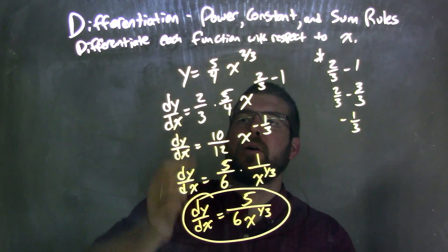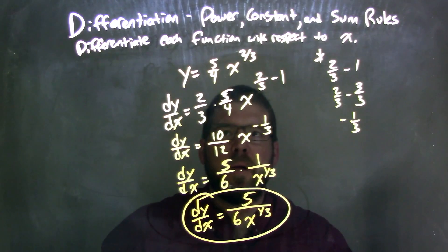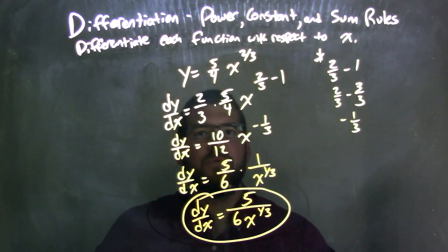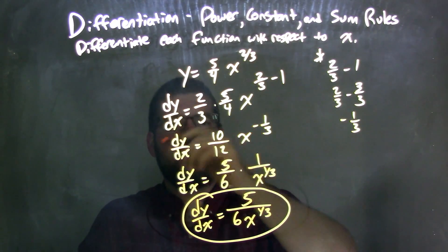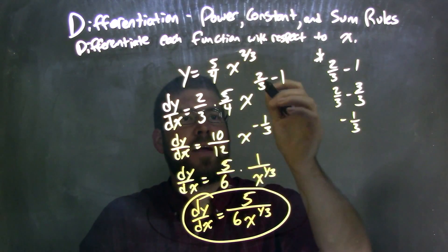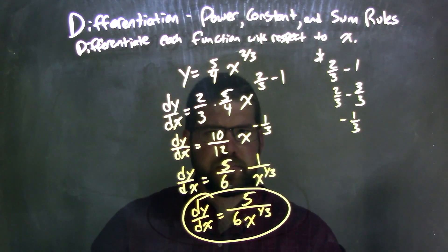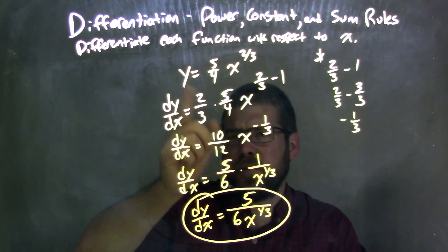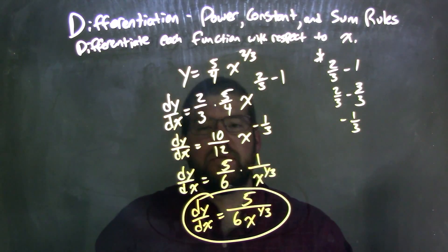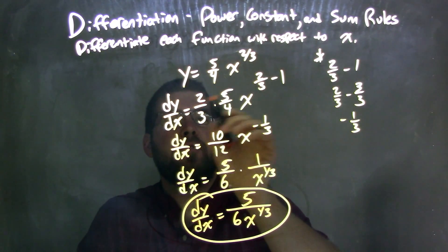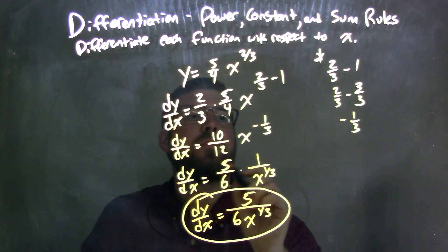So let's recap here. We're given y equals 5 fourths x to the 2 thirds power. When I derive this, I'm using the power rule. I bring down the 2 thirds to the front to multiply, and I take my exponent and subtract 1 from it. You could have simplified the fraction here, which I probably would have done normally, but it's all good. 2 times 5 is 10, 3 times 4 is 12. Fantastic.